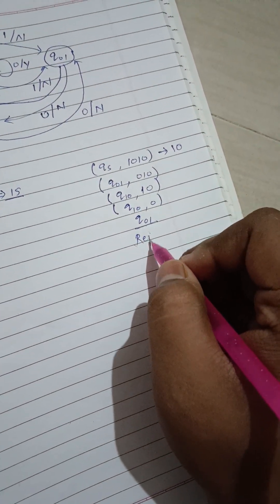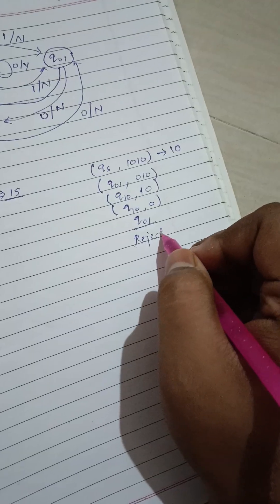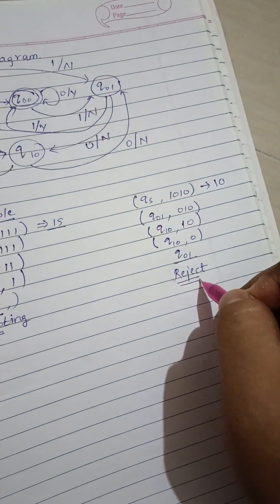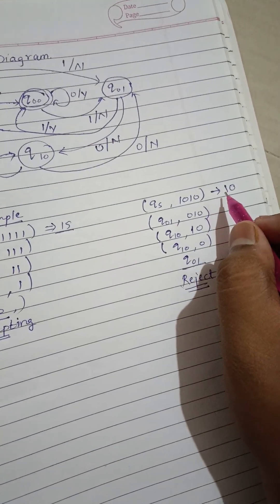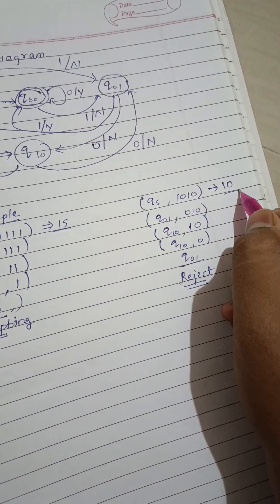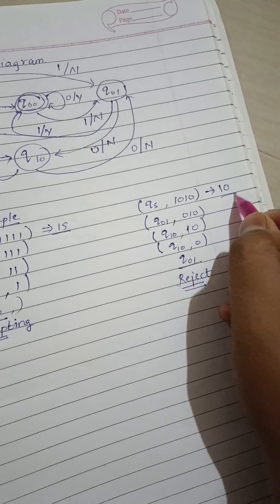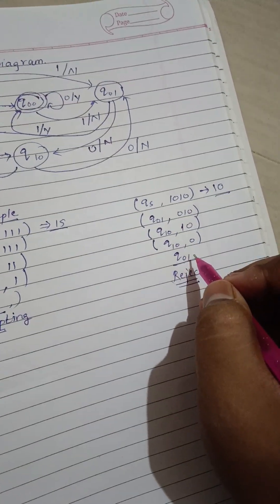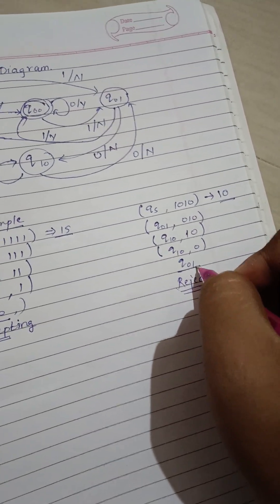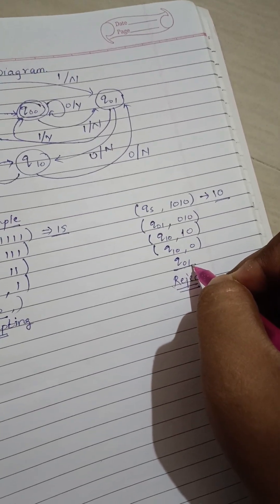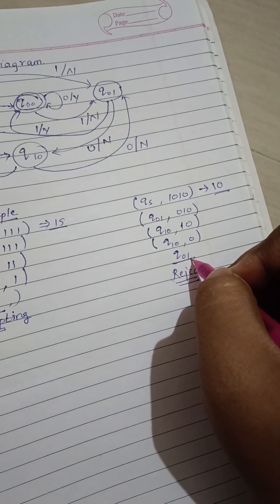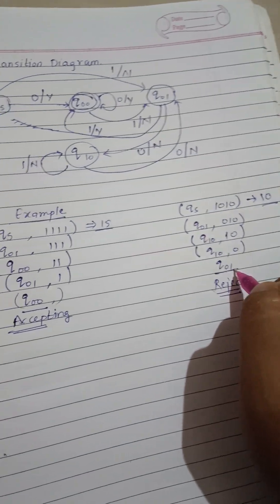We are rejecting it. How can you cross-check if our answer is correct? In decimal, the number is 10. If you divide by 3, the remainder will come as 1. And state Q01 is also the state with remainder 1. In this way, we can verify our answer.